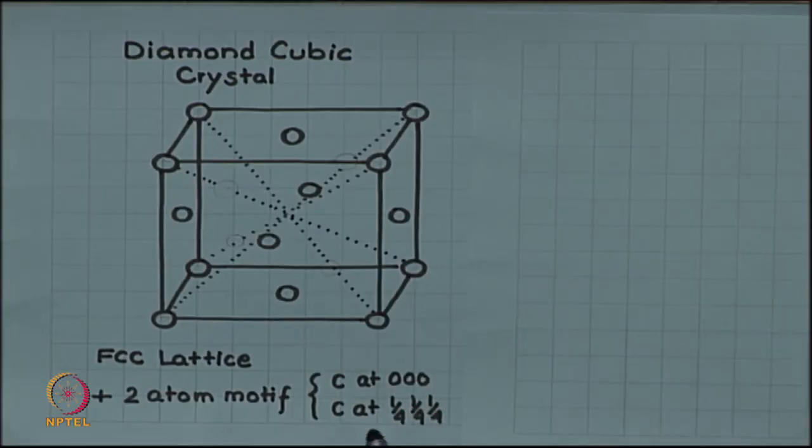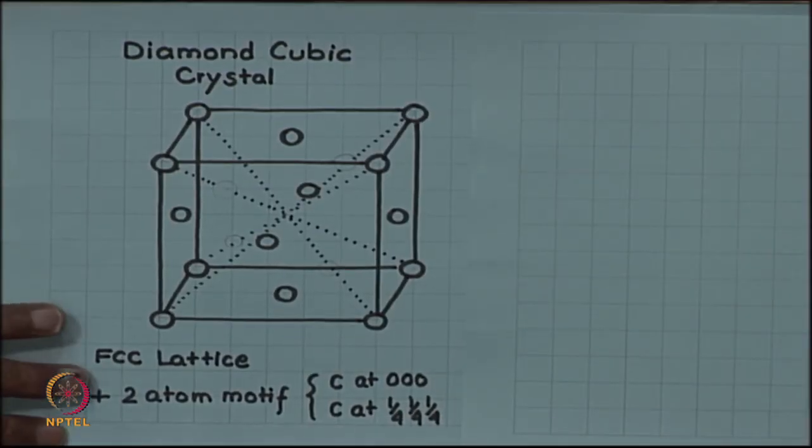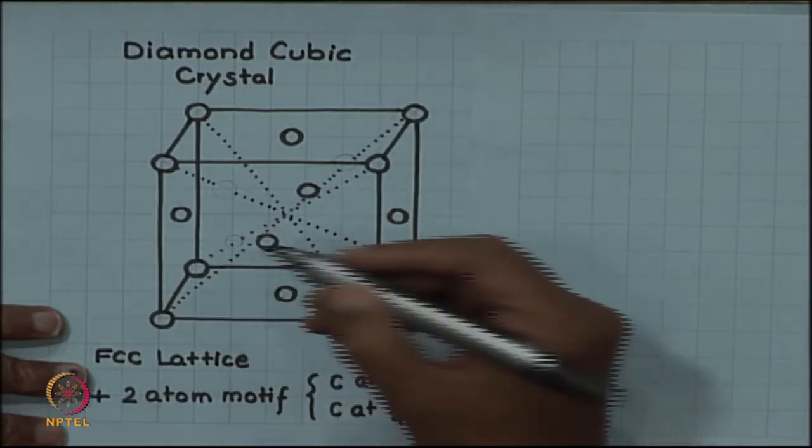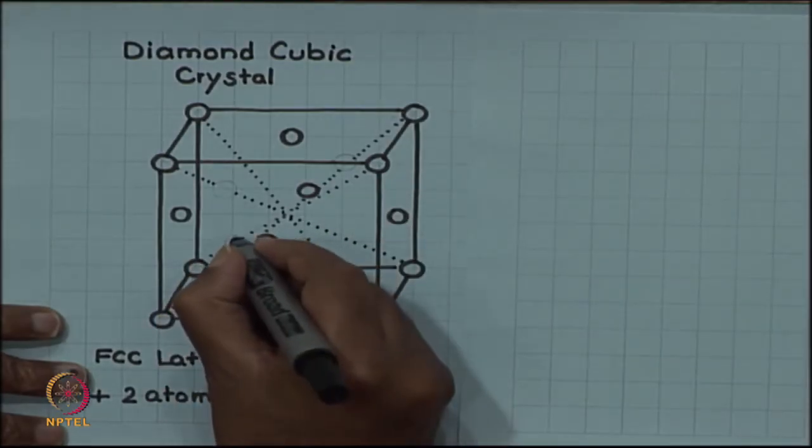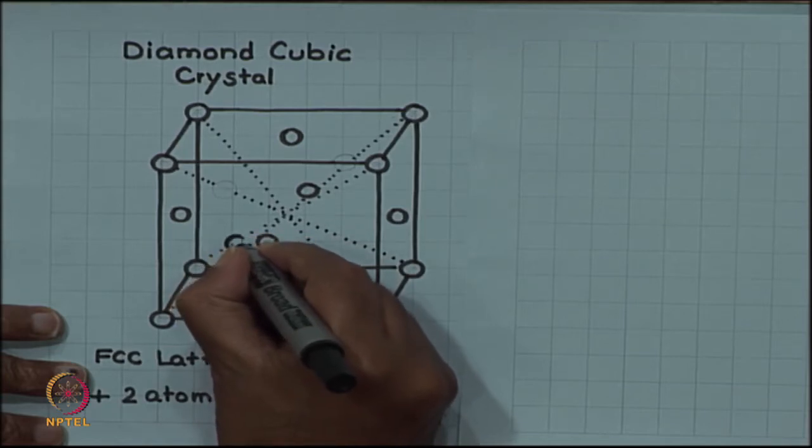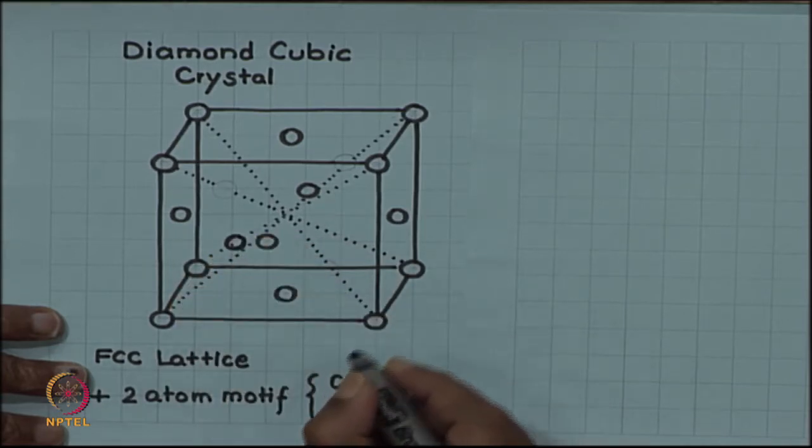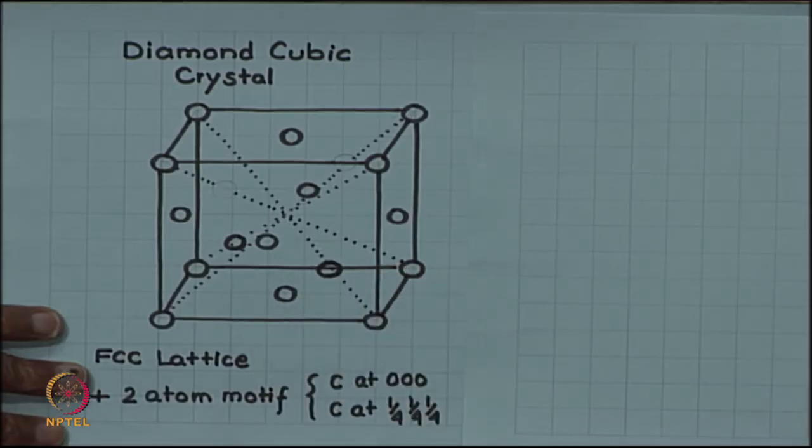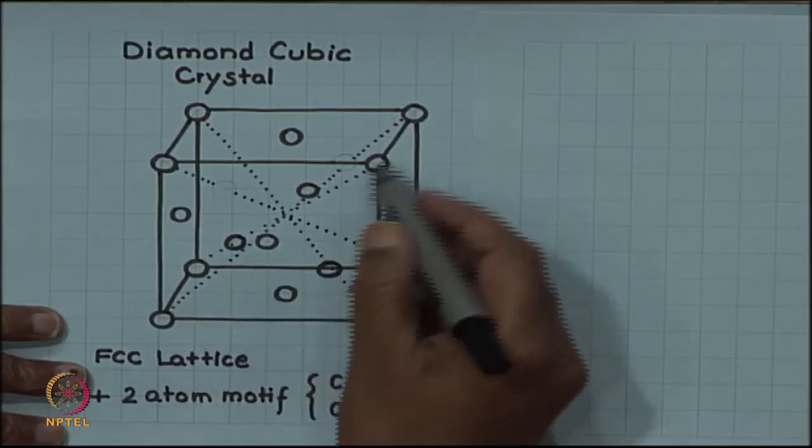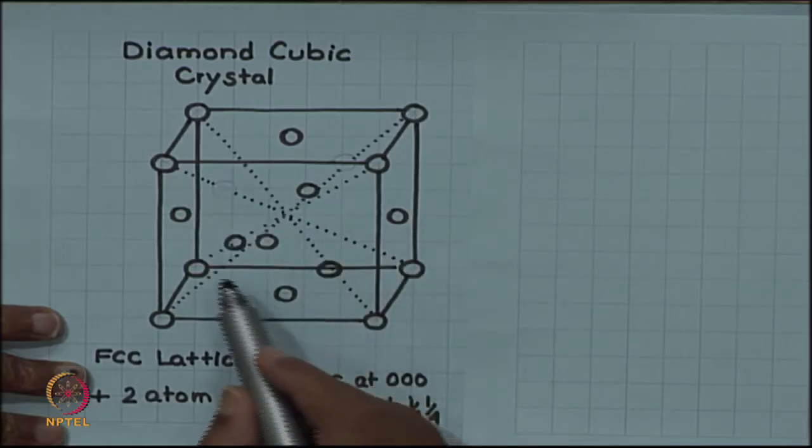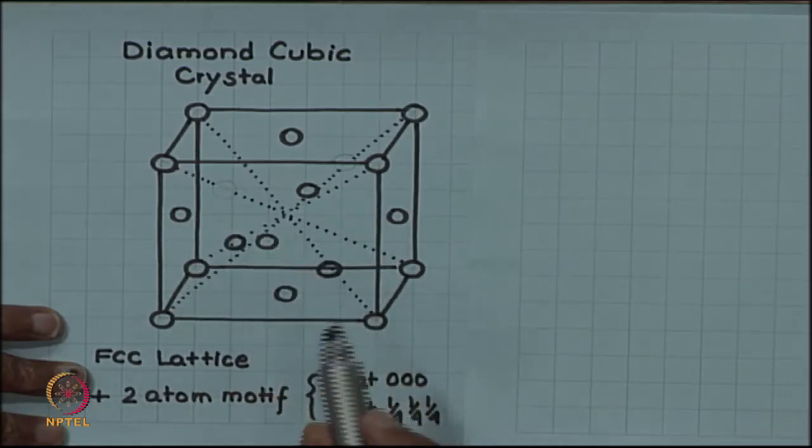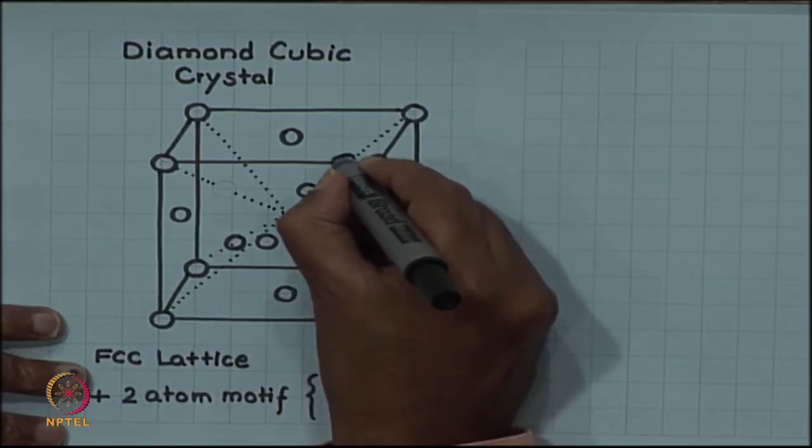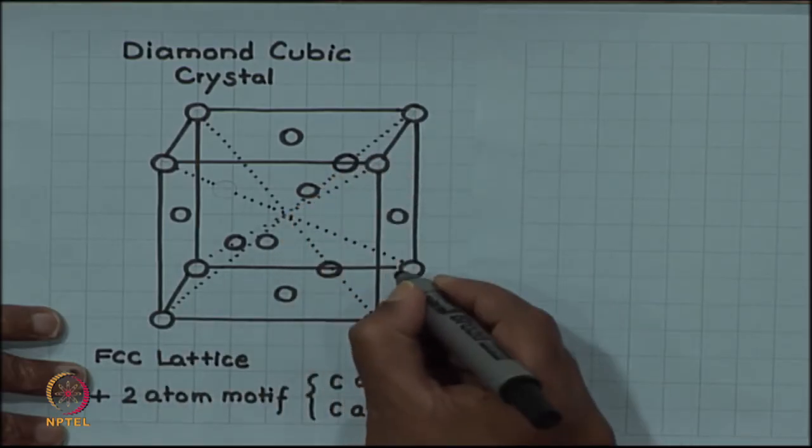But then there are 4 carbon atoms inside the unit cell which are sitting, one each, on the body diagonals. On 2 body diagonals, the carbon atoms are one fourth up from the bottom. On the other 2 body diagonals, the carbon atoms are three fourths up from the bottom.